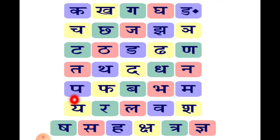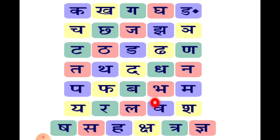प — प से पतंग। This is पवर्ग। फ से फल। ब से बतख। भ से भालू। म से मटर।